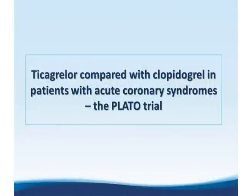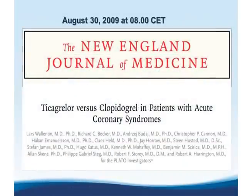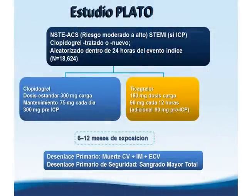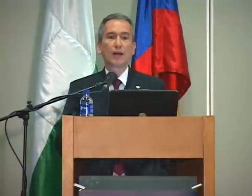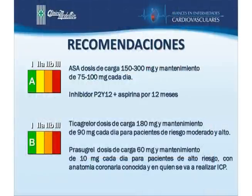El ticagrelor se comparó con clopidogrel en el estudio PLATO, publicado en New England Journal of Medicine, en pacientes con síndrome coronario agudo con o sin elevación del ST, aleatorizados dentro de las 24 horas con seguimiento de 6 a 12 meses. En el desenlace primario —muerte cardiovascular, infarto, ACV— el ticagrelor mostró un HR de 0.84 con intervalo de confianza que no alcanza el 1, demostrando mayor efectividad que el clopidogrel con significancia estadística.